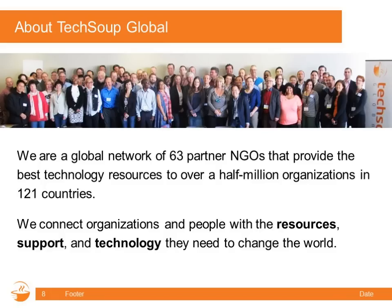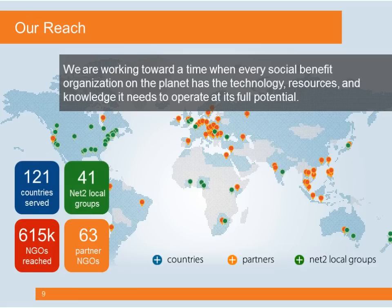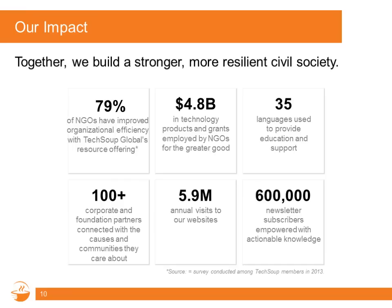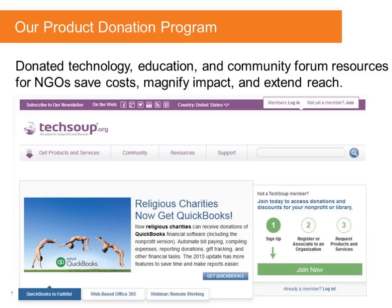A little about TechSoup: we're a global network of 63 partners serving technology resources and knowledge in more than 120 countries. We deliver technology donations through partners like Intuit, which provides QuickBooks, and groups like QuickBooks Made Easy to nonprofits and social do-gooders around the world. We've now served nearly $5 billion in technology products and grants to the social benefit sector. Learn more at TechSoup.org.